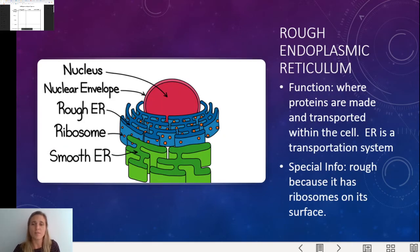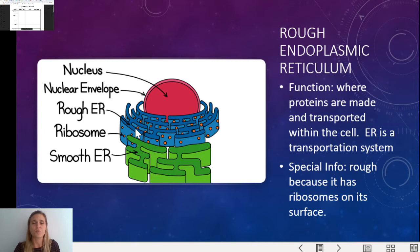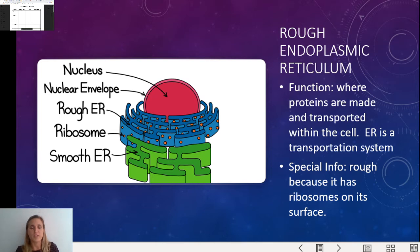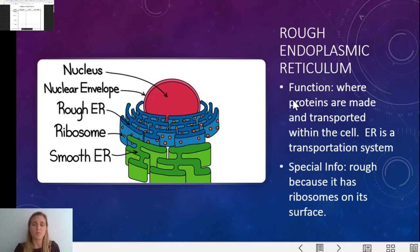The rough endoplasmic reticulum is attached to the nucleus. The rough ER is the organelle that looks like a maze — like a circle maze attached to the nucleus with little circles on it, and those circles are the ribosomes. It's called rough endoplasmic reticulum because it has those ribosomes attached to it. The rough ER is for making and transporting proteins: it gets the proteins made from the ribosomes and then transports those within the cell, sending them where they need to go.